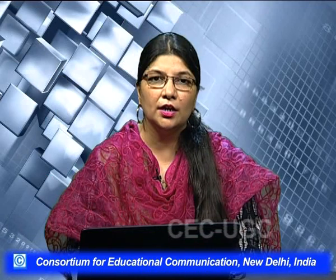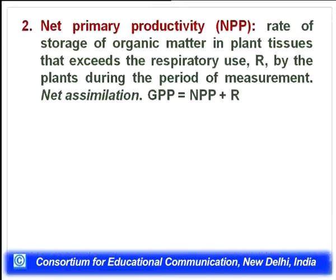In realistic terms, the energy available to be passed on from one level to another is net primary productivity (NPP): the rate of storage of organic matter in plant tissue that exceeds the respiratory use by plants during the period of measurement — basically the net assimilation. GPP equals NPP plus R, where R is energy used for respiration or maintenance. NPP is the energy stored in tissues, leaves, and fruits that will be available to pass to the next trophic level.